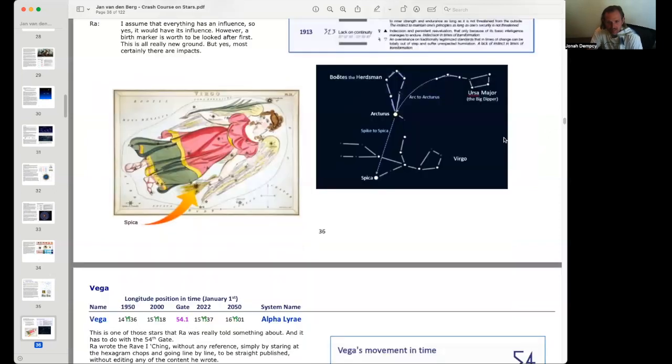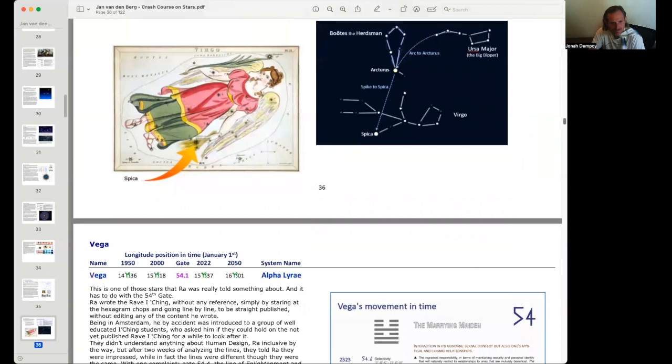As we saw previously, when the planet of that line is in its exaltation or detriment is when the star's influence is most profound. It remains in line four until 2047, when it moves into line five, which is about flexibility and adaptation to circumstances, which we can imagine will be very necessary in 2047. Here we see Spica and Ursa Major, the Big Dipper nearby, Arcturus, the constellation of Virgo and the constellation of Boötes, the Herdsman. There's Spica in this image here, in the bushel of wheat in the hand of Virgo.